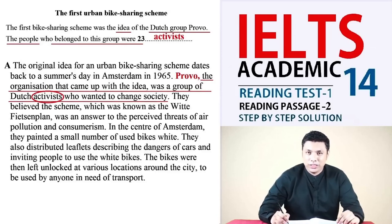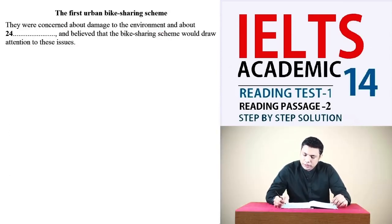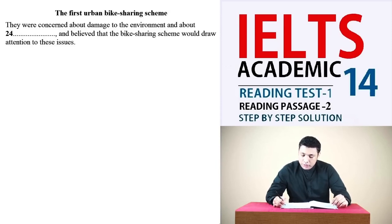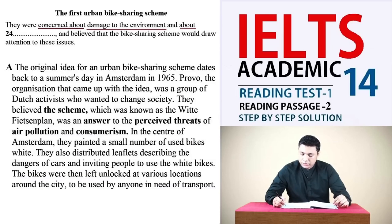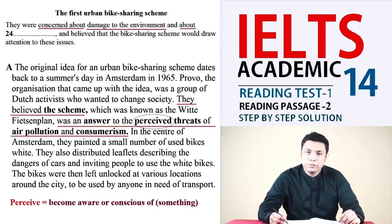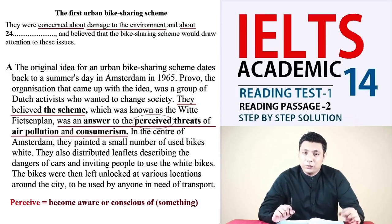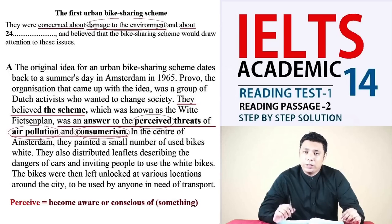Next: 'They were concerned about damage to the environment and about ___, and believed that the bike sharing scheme would draw attention to these issues.' Keywords here are 'concerned about damage to the environment.' Reading from the third to fifth lines of paragraph M, the scheme was described as an answer to the passive threats of air pollution and consumerism. The phrase 'damage to the environment' indicates air pollution, so the answer is 'consumerism' as it matches the other issue they were looking for.